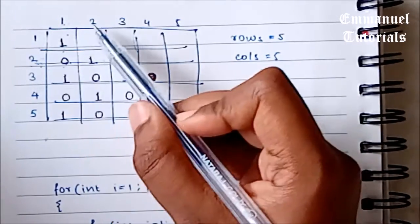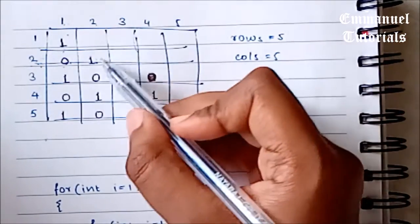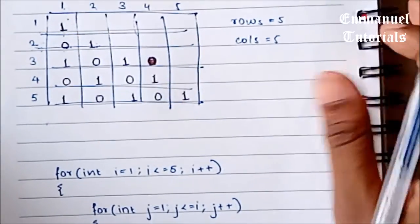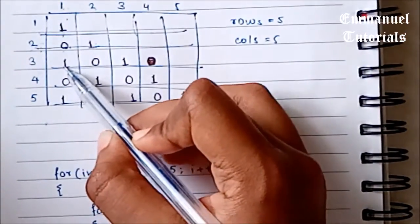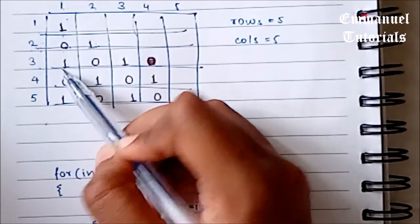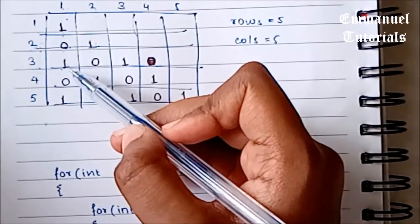Let's check for the next number. Column number is 2, 2 plus 2 is 4, 4 mod 2 is 0, the remainder is 0, we are printing 1. Similarly, we'll check for the next one. The row number is 3, the column number is 1, 3 plus 1 is 4, 4 mod 2 is 0, the remainder is 0, we are printing 1.